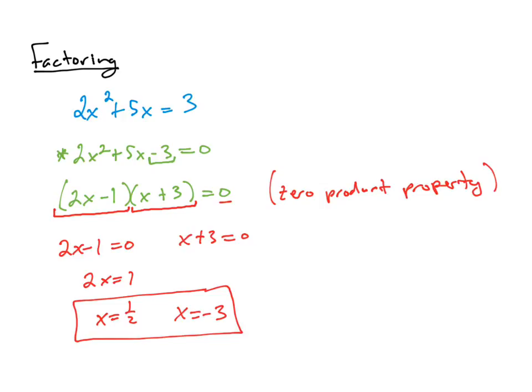Typically in a quadratic equation, we'll get two solutions. In general, whatever the highest exponent of an equation is, that tells us the greatest number of possible solutions. So when we're solving a quadratic equation, we may get two solutions, we may only get one solution, we may get zero solutions, but we can never get three solutions. Two is the greatest number of solutions to a quadratic equation.